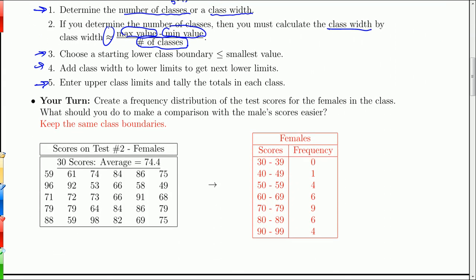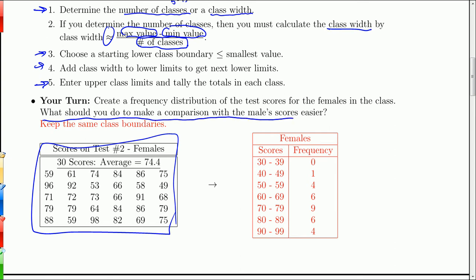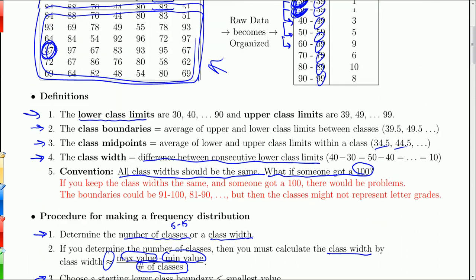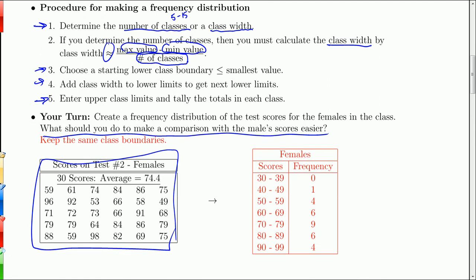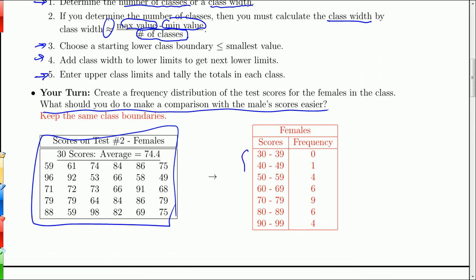For the 'your turn' exercise, we take the same course but now we have 30 scores for the females in class, and I want you to create a frequency distribution. What should you do to make the comparison with the male scores easier? Well, clearly the best way is to use the same classes — that's going to make our whole life a little easier for comparing. So it just shows the same classes, and then we have to tally things up.